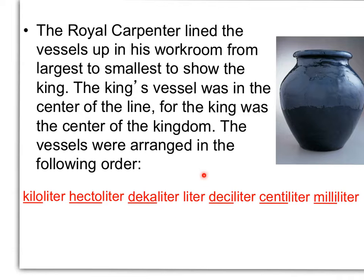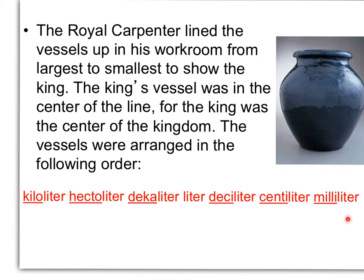Liter is what the king liked to drink his chocolate milk from, so this is going to be our base. Anything to the right of it is smaller, anything to the left is larger. If you look to the right of the liter, deci means ten — if we take a liter and cut it into ten parts, each one of those parts would be a deciliter, one-tenth of a liter. Centi means a hundred, so it would take a hundred of these to make one liter. Milli means a thousand — it would take one thousand milliliters to equal one liter. Going to the right, it gets smaller and smaller.